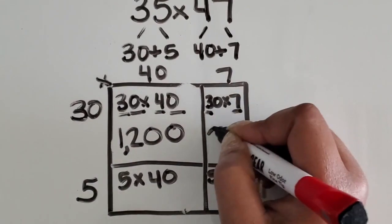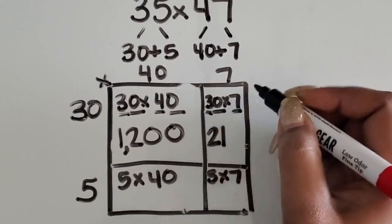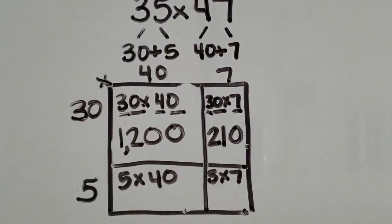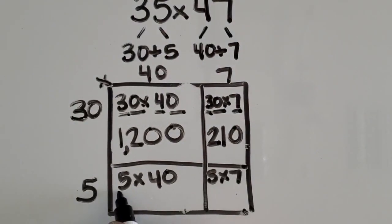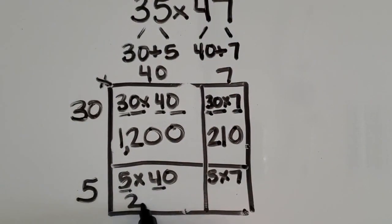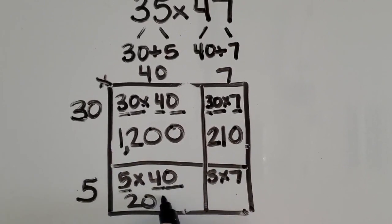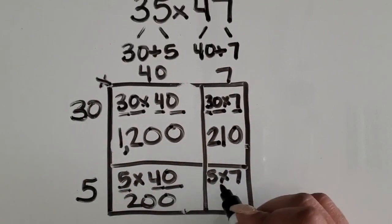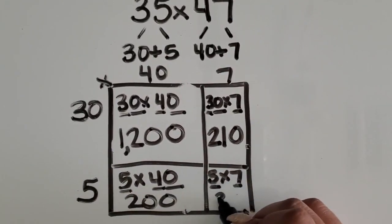3 times 7 is 21, 10 times greater than 21 is 210. 5 times 4 is 20, 10 times greater than 20 is 200. 5 times 7 is 35.